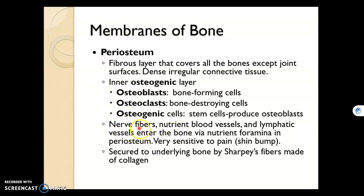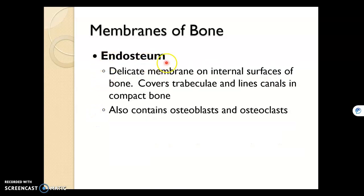Periosteum has a lot of nerve fibers and blood vessels, and is secured to the bone by something called Sharpey's fibers. The endosteum — 'endo' meaning within, 'osteum' meaning bone — is on the internal surface, so it covers trabeculae, which is the structure of spongy bone, that honeycomb pattern.